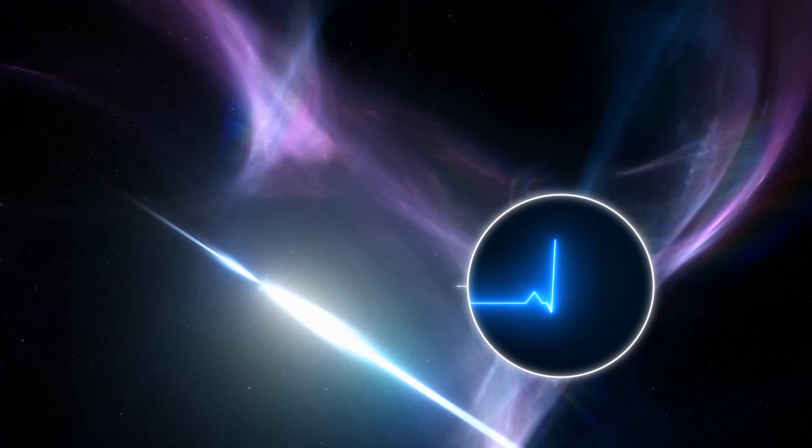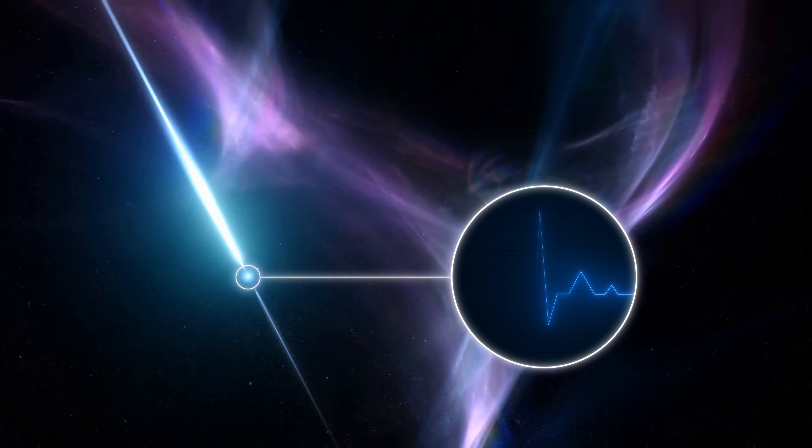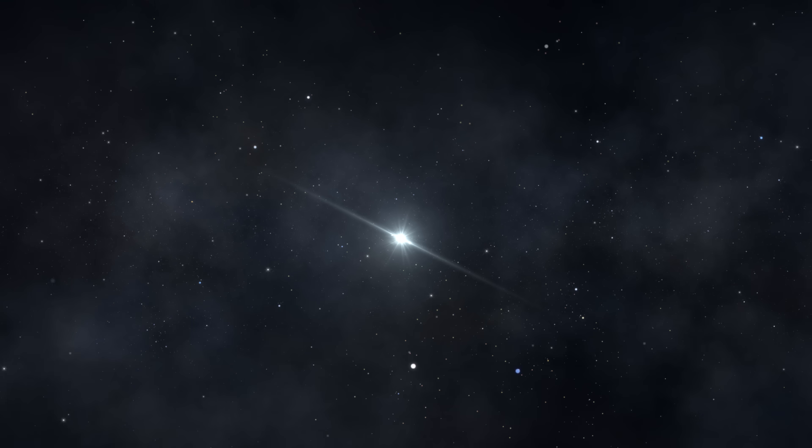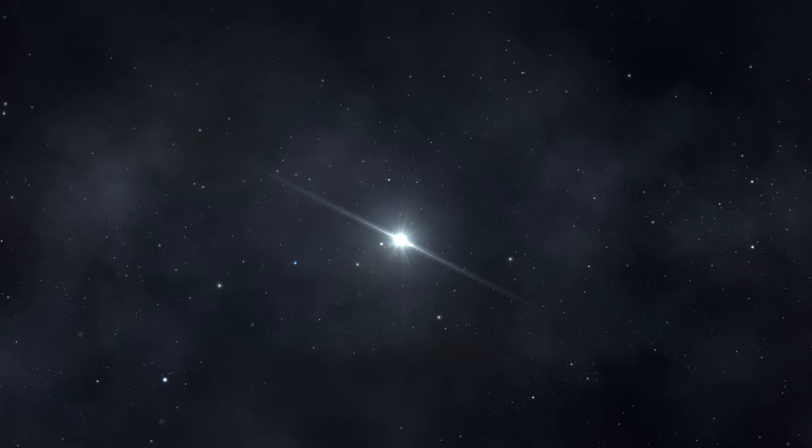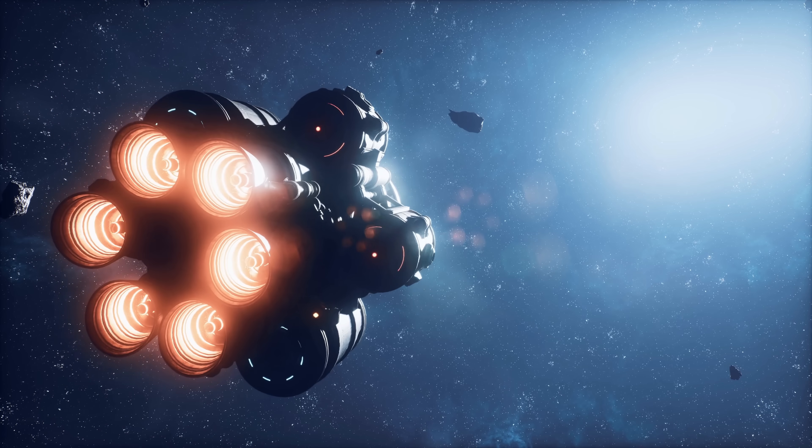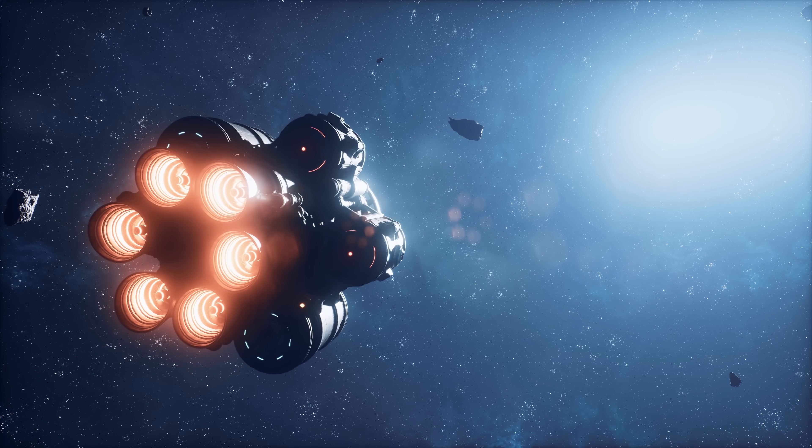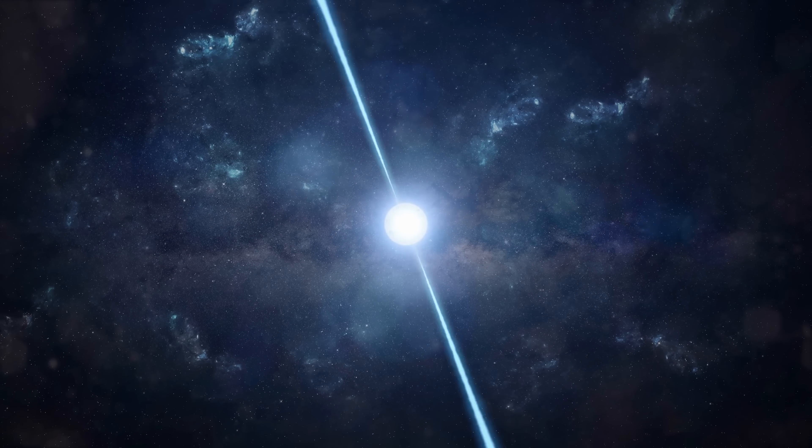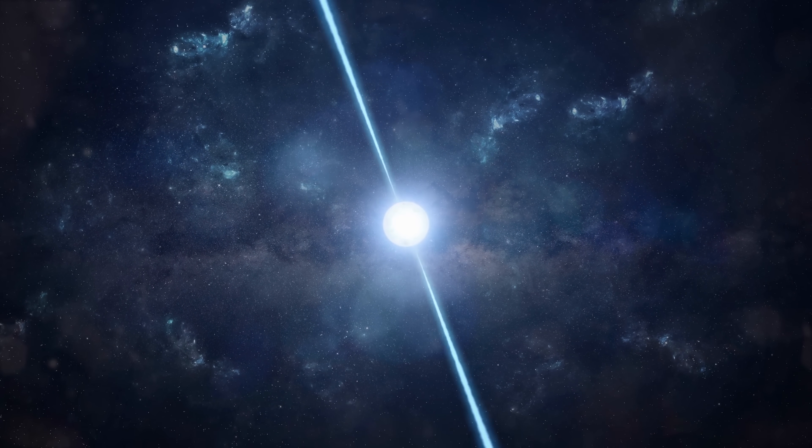The signals from pulsars are usually quite regular, often with millisecond accuracy. This predictability has even led to the use of some pulsars as space clocks to aid in tasks such as spacecraft navigation. So, could GPM J1839-10 be a pulsar?